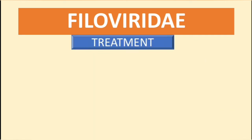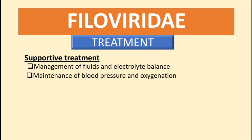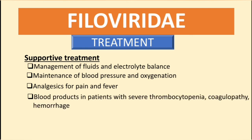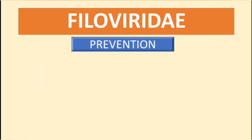We do not have a specific treatment for Ebola and Marburg virus, but supportive treatment includes management of fluids and electrolyte balance, maintenance of blood pressure and oxygenation, analgesics for fever and pain, and blood products in patients with severe thrombocytopenia, coagulopathy, and hemorrhage. Aspirin and NSAIDs should be avoided in viral hemorrhagic fevers because they are associated with an increased risk of bleeding.